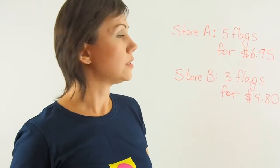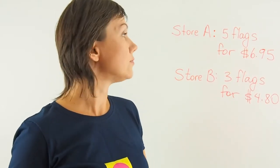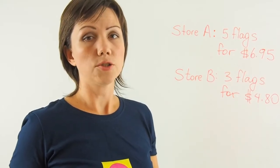So in this case I would need to divide $6.95 by 5 for store A and divide $4.80 by 3 for store B. I would have to find the price per one flag in each store and then compare the two prices in order to find out how much one is cheaper than the other.